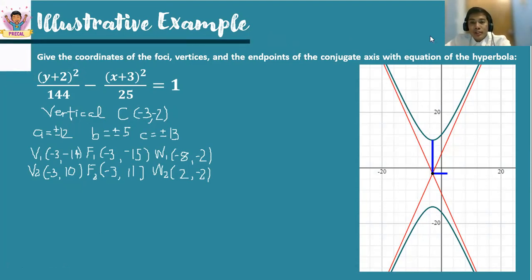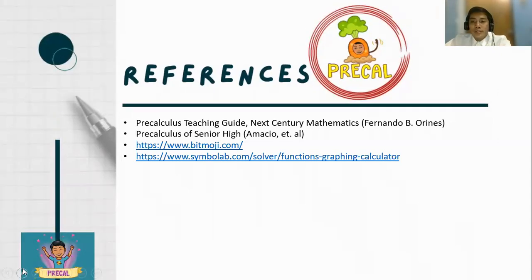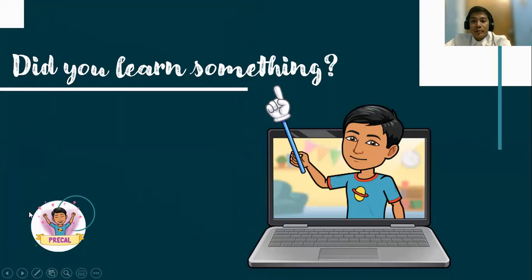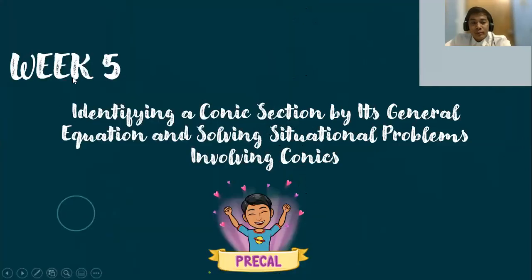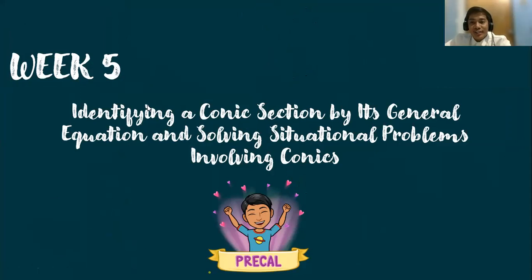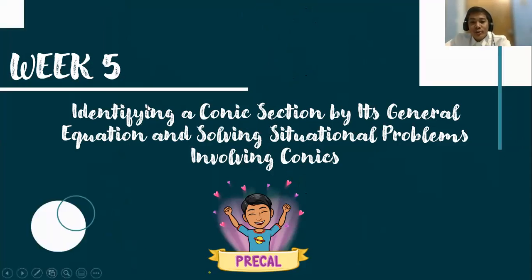I hope these examples are enough for you to understand the coordinates of those points. These are the references used in this presentation. I hope you learned something from our three video lessons: the definition of the hyperbola, the standard equation of the hyperbola center at (0, 0), and the standard equation of the hyperbola center at HK which we discussed in this video lesson. We are now done with week 4. For our next video lesson, we will proceed to week 5: identifying a conic section by its general equation and solving situational problems involving conics. Again, this is Sir Peter, your pre-calculus teacher. Thank you.